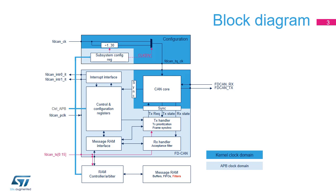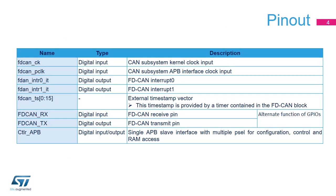A shared 0.8 KB message RAM memory is available. This RAM is used to contain the filters, buffers and FIFOs. The CAN subsystem I/O signals and pins are detailed in this table.